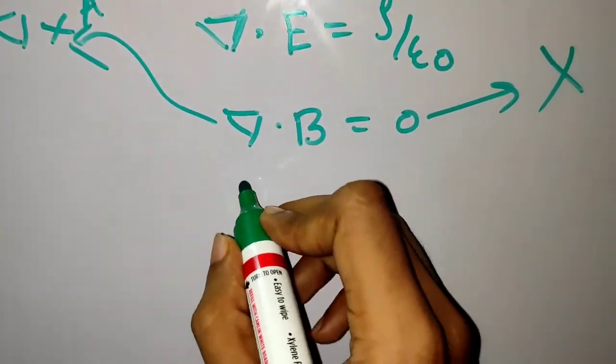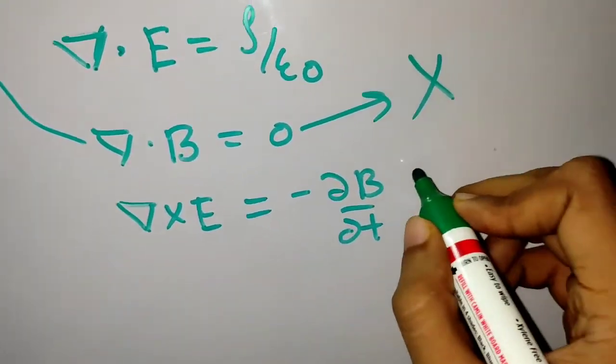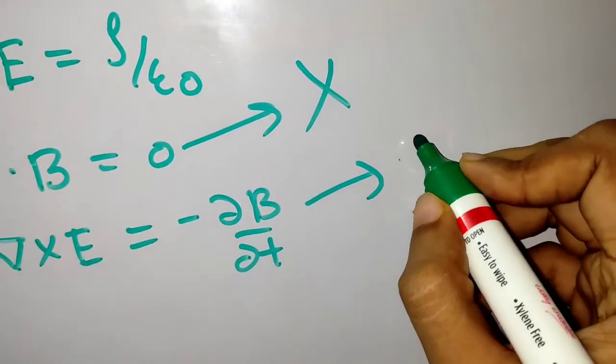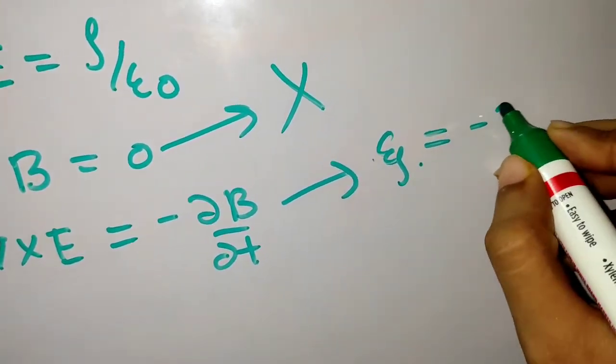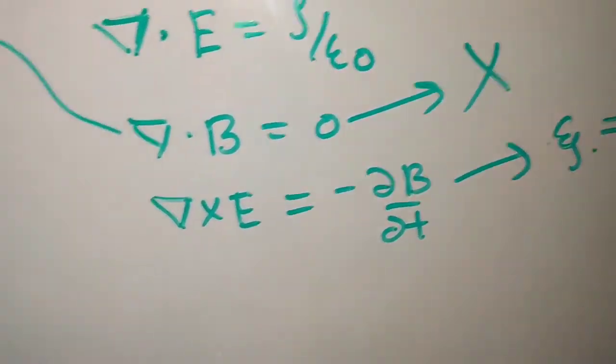The third one is curl of E equals minus del B del T, which is Faraday's law. It says induced EMF is minus del del T of the magnetic flux and has Lenz's law incorporated in it.